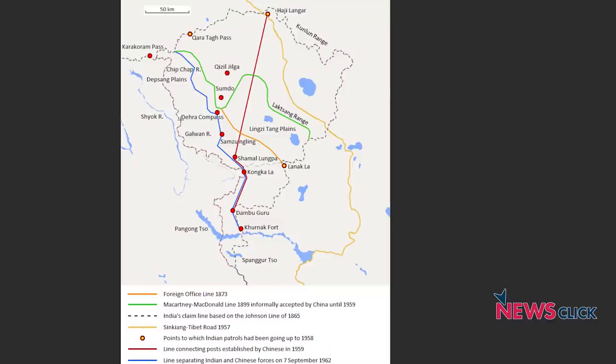As these countries have become more powerful and developed, they have pushed their definition of the border, leading, as we know, to the 1962 war. Aksai Chin, which India claims as part of India, has been under occupation by China. This is the territory essentially seen as part of India that is under Chinese occupation.